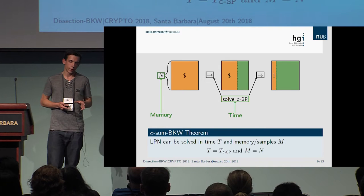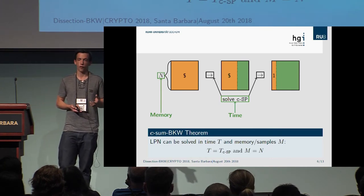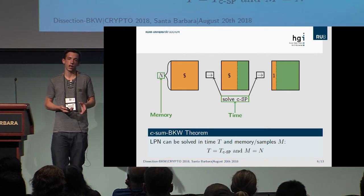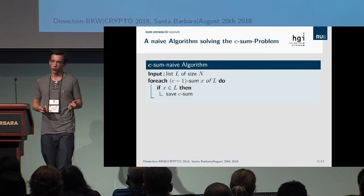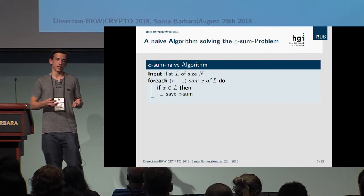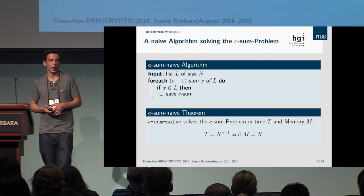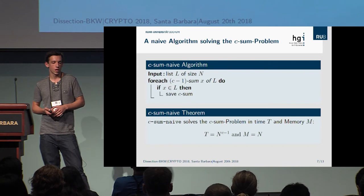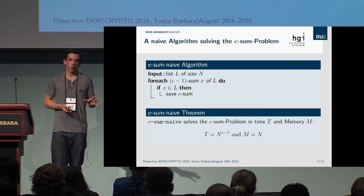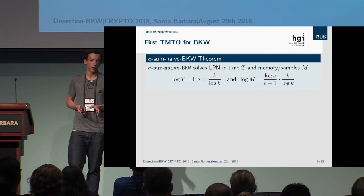We can now concentrate on algorithms solving the C-SUM problem and plug them into our framework to form time-memory trade-offs. Let's start with a simple naive algorithm: a nearly brute-force approach called the C-SUM naive algorithm. It computes all (C-1)-sums of the list, searches for each sum in the list, and if it exists, stores the corresponding C-SUM. This algorithm has time complexity O(N^(C-1)), and memory complexity N for the properly chosen list size.